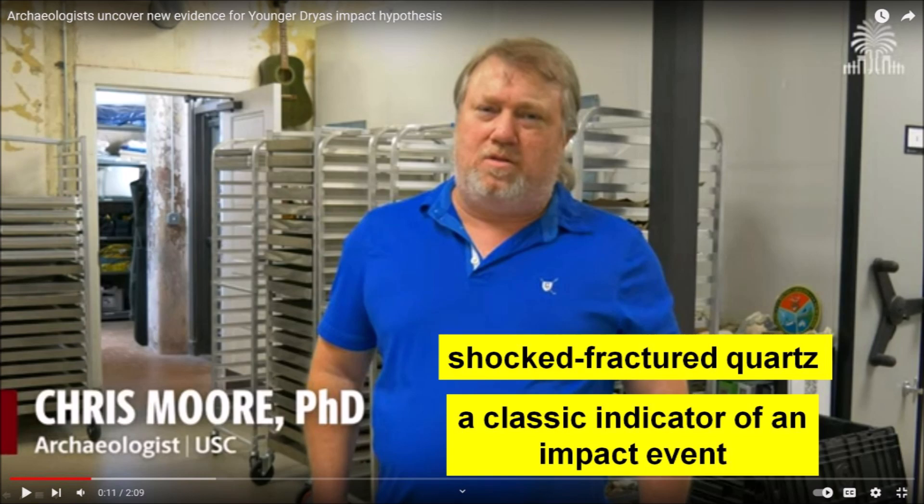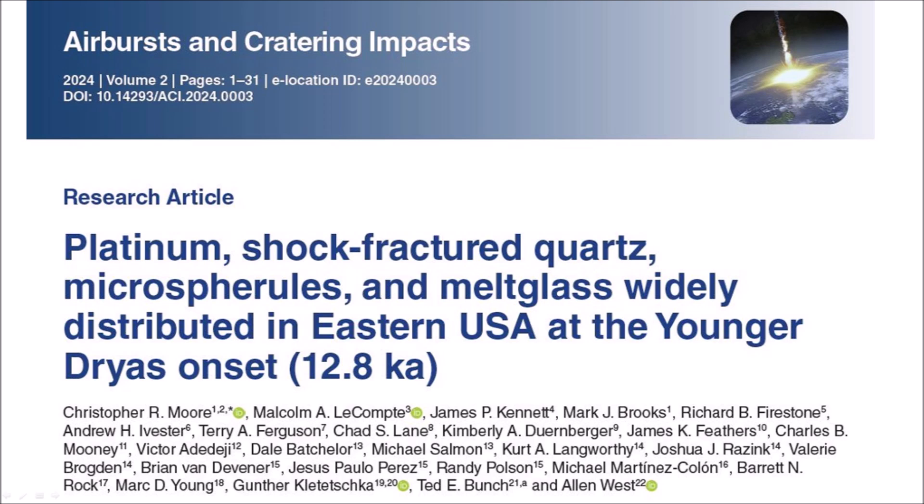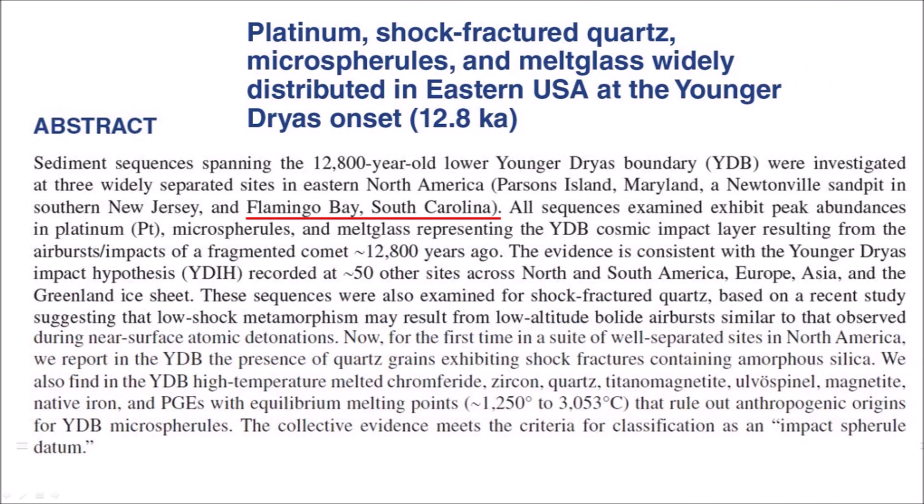The new paper is titled 'Platinum, Shock Fractured Quartz, Microspherules, and Melt Glass Widely Distributed in Eastern USA at the Younger Dryas Onset 12,800 Years Ago.' The abstract states that sediment sequences spanning the 12,800-year-old Younger Dryas Boundary were investigated at three widely separated sites in eastern North America: Parsons Island, Maryland; Newtonville Sandpit, southern New Jersey; and Flamingo Bay, South Carolina. All sequences exhibit peak abundances of platinum, microspherules, and melt glass representing the YDB cosmic impact layer resulting from airburst impacts of a fragmented comet 12,800 years ago.